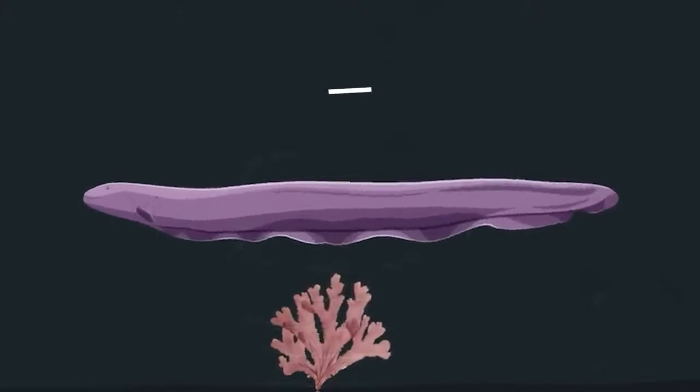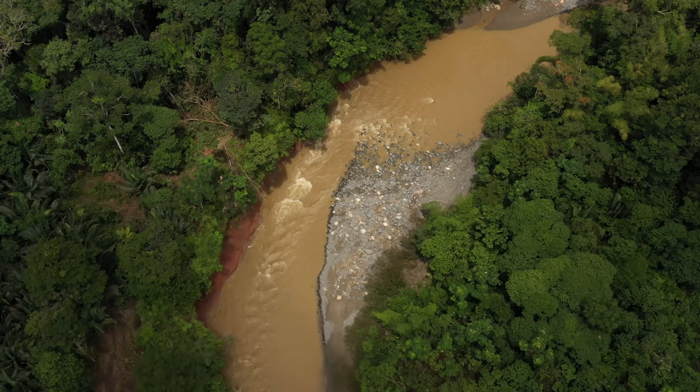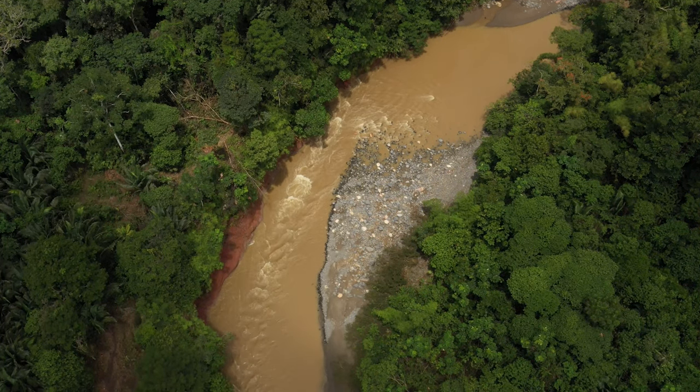Moreover, with the help of low-voltage electrical signals, an eel makes a 3D picture of the surroundings, since water in Amazonian rivers is turbid.